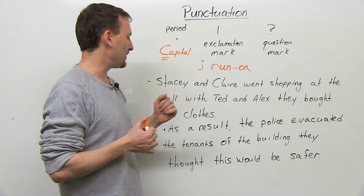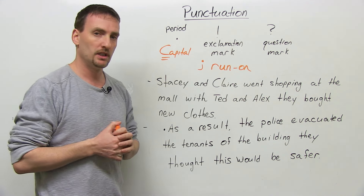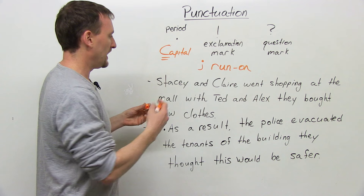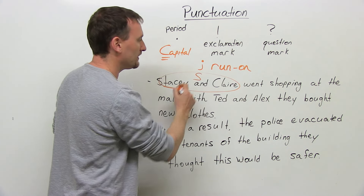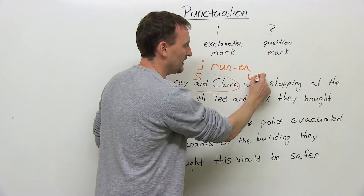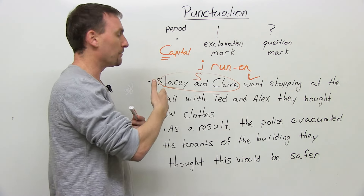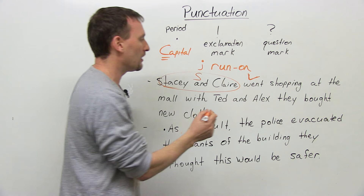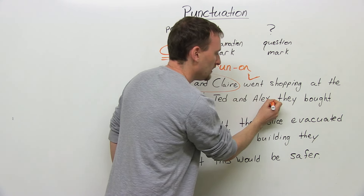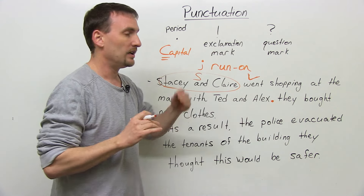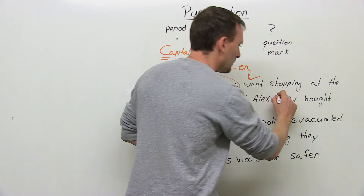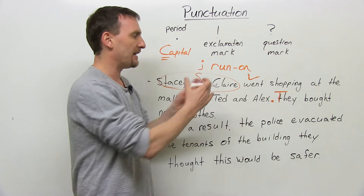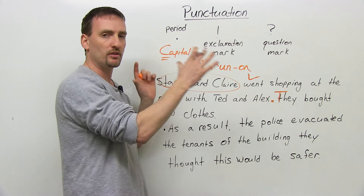"Stacey and Claire went shopping at the mall with Ted and Alex they bought new clothes." Does this sentence seem okay to you? If it does, there's a problem. We have Stacey and Claire as your subject, went shopping at the mall — where? With Ted and Alex. This is a complete idea. Your idea is complete. Now, what did they do at the mall? They bought new clothes. I put a period, I put a capital — I have two separate ideas, therefore two separate sentences.